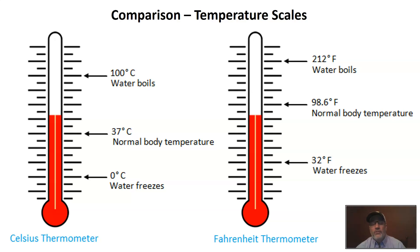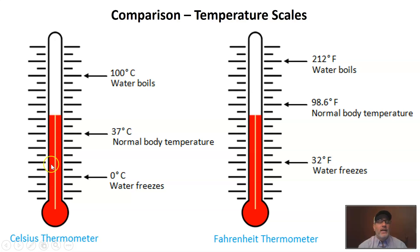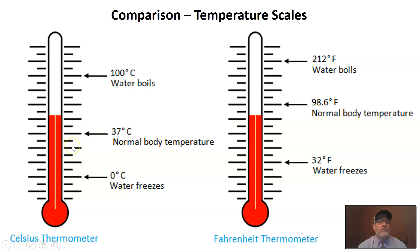Fahrenheit is not part of the metric system. We brought this temperature scale with us when our ancestors came from England. When we look at a thermometer, we are just looking at a liquid inside of a really tiny capillary tube. As this liquid heats and cools, it expands and contracts, which makes this liquid appear to move up and down along the scale.